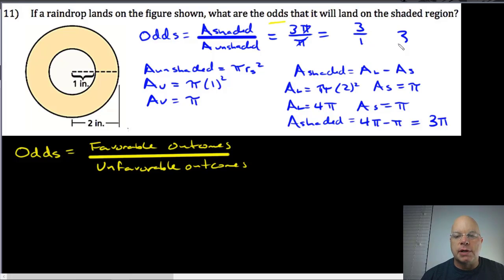And so we get a 3 to 1 ratio. So the odds are 3 to 1. They could be written in any one of these three forms.